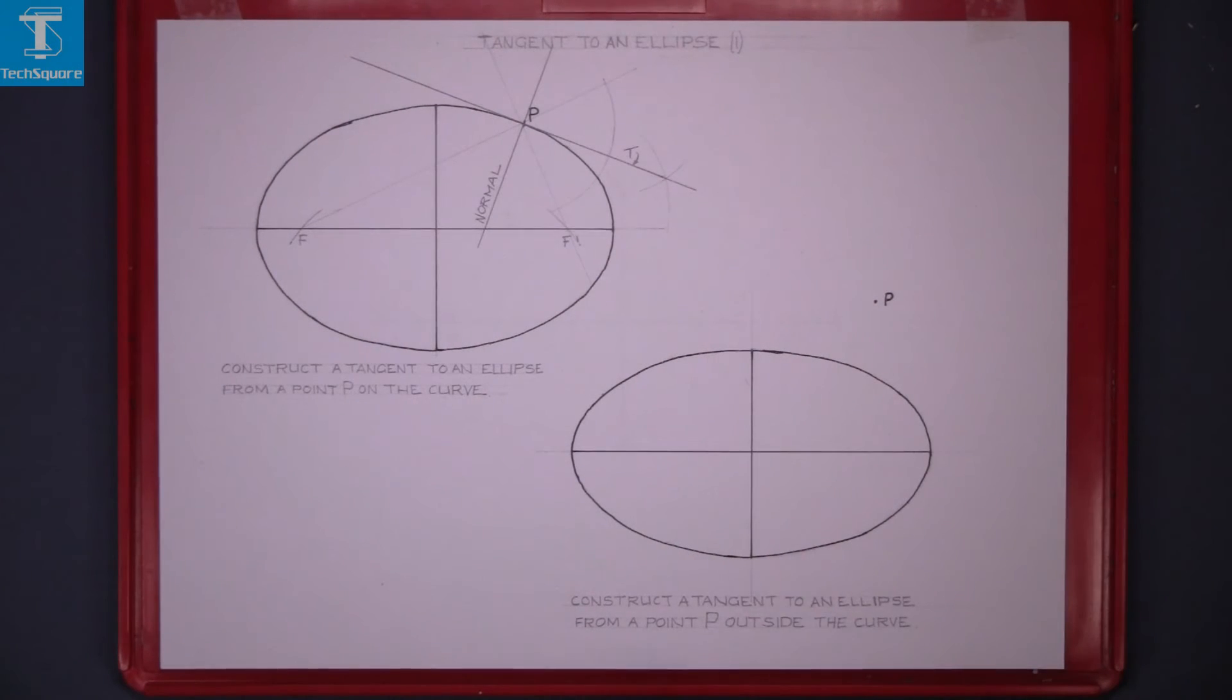Now this next question, construct a tangent to an ellipse from a point P outside the curve. Find the focal points as before.